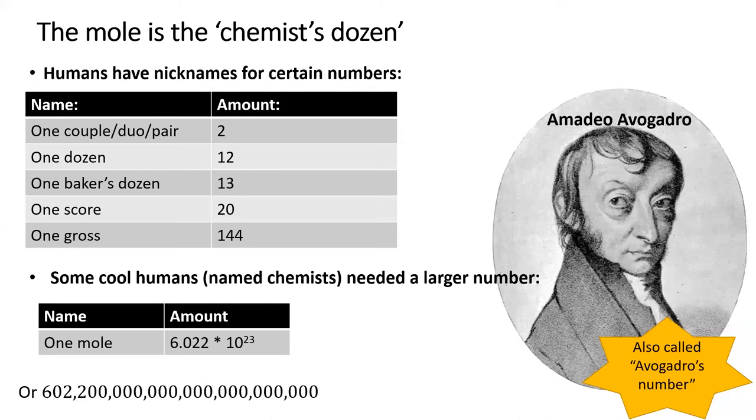Interestingly, Avogadro never knew the value of a mole. It's named after him because he predicted that one number could convert between microscopic and macroscopic masses.